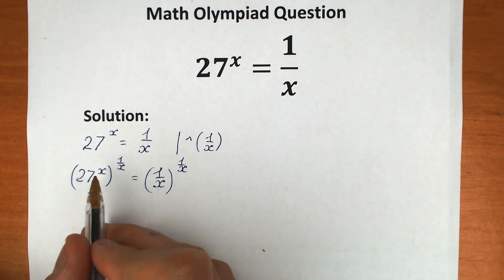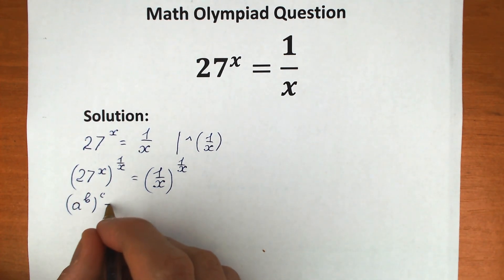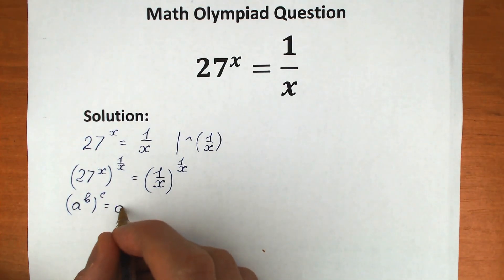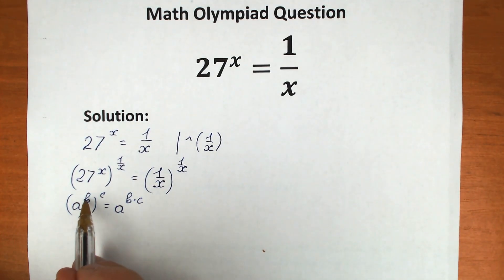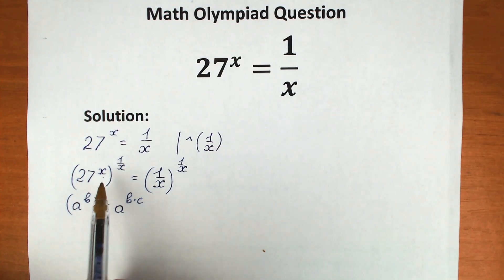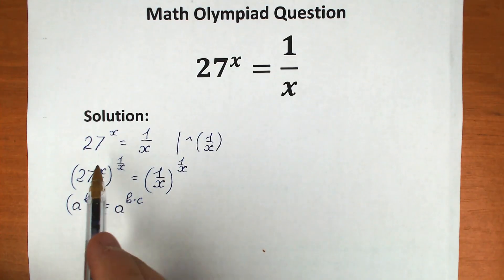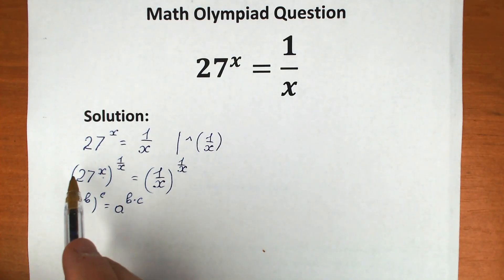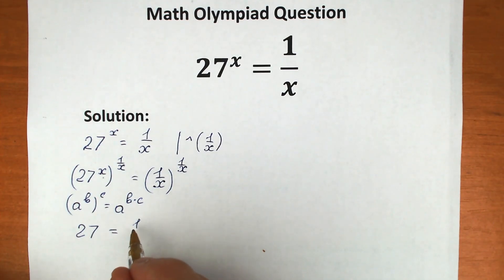What are we going to do next? Take a look closely right here. We have a situation like a to the power b, raised to the power c. We can easily write this as a to the power b times c — we can multiply these two powers. In this case, x times 1 over x equals 1, so x cancels, and on the left hand side we have only 27. On the right hand side we have 1 over x to the power 1 over x.